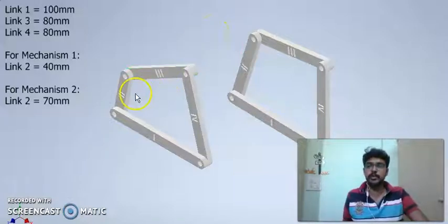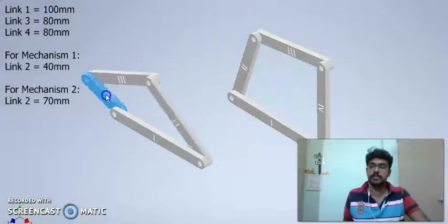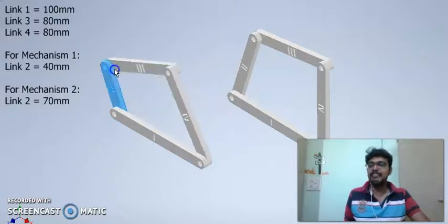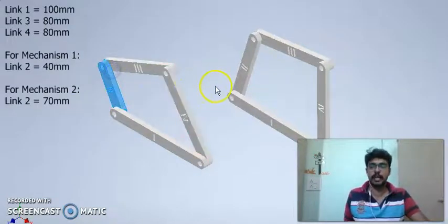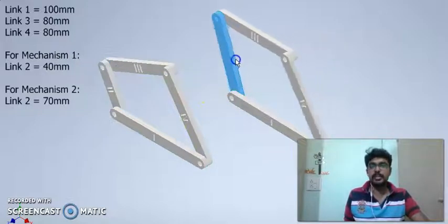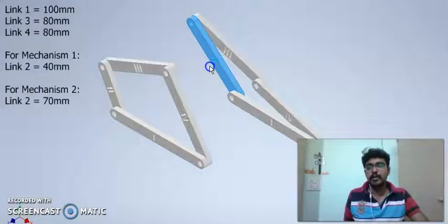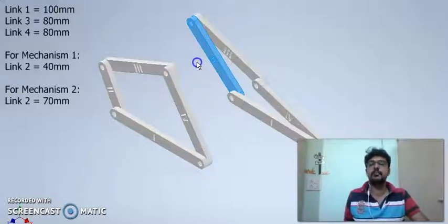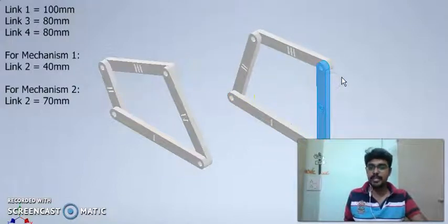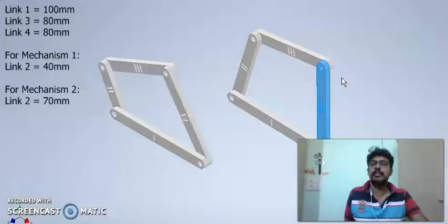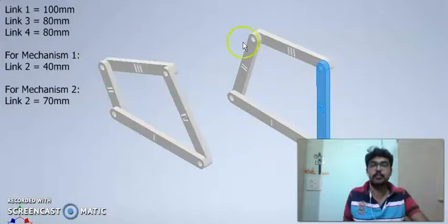Now, let us try to give a complete rotation to link 2 for the first mechanism. We see that we are able to give complete rotation to link 2 for the first mechanism. However, when we try to rotate link 2 of the second mechanism, we are not able to proceed further. Grashof researched why this is happening and ultimately he proposed a theory — he came up with a very interesting fact — that the length of links has something to play with.